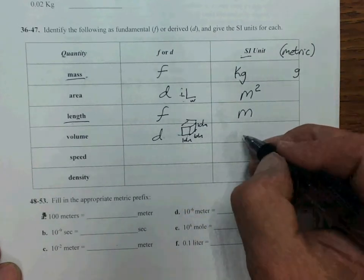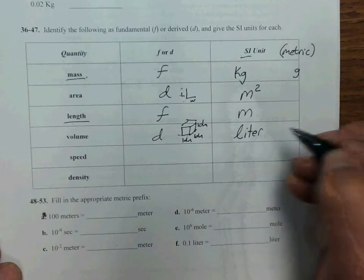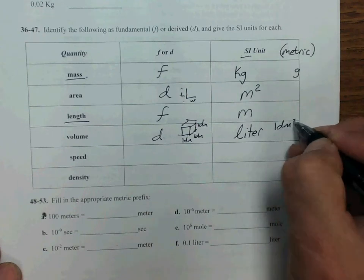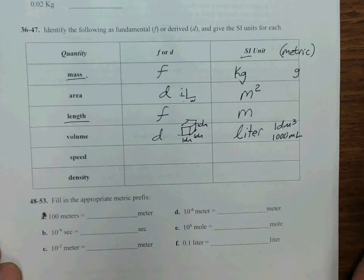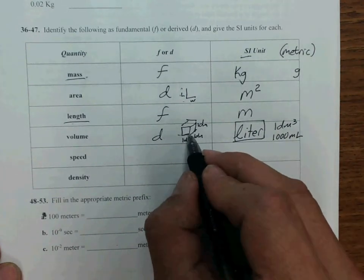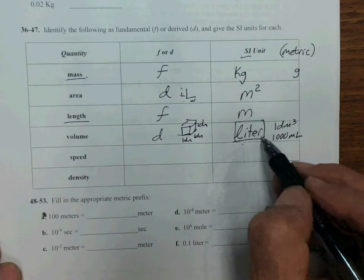And that makes the liter, which is one decimeter cubed or 1,000 milliliters. So that would be 10 centimeters by 10 centimeters by 10 centimeters. The SI unit for volume is the liter.